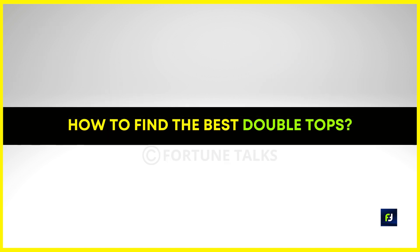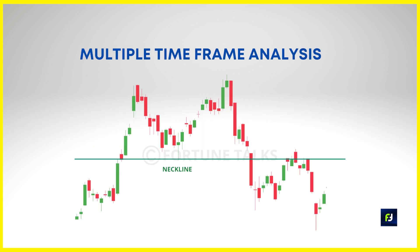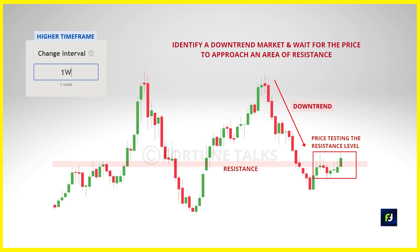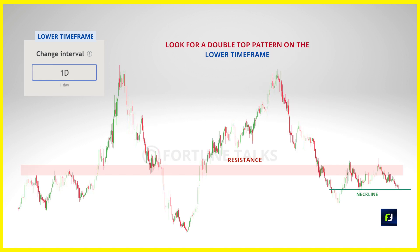There is one more important piece of information for finding and trading double tops with high accuracy, which involves multiple time frame analysis. The concept is simple: first identify a downtrending market on a higher time frame, then wait for the price to approach an area of resistance on the higher time frame. If you find such a setup, move down to your lower time frame and look for a double top pattern there. This is a simple yet effective technique that allows you to time your trade entries at the absolute highs of the double top pattern — the best possible price level and a professional way of trading this pattern. If you're not comfortable using this, you would be better off ignoring it. Just choose one or two approaches that work well for you.